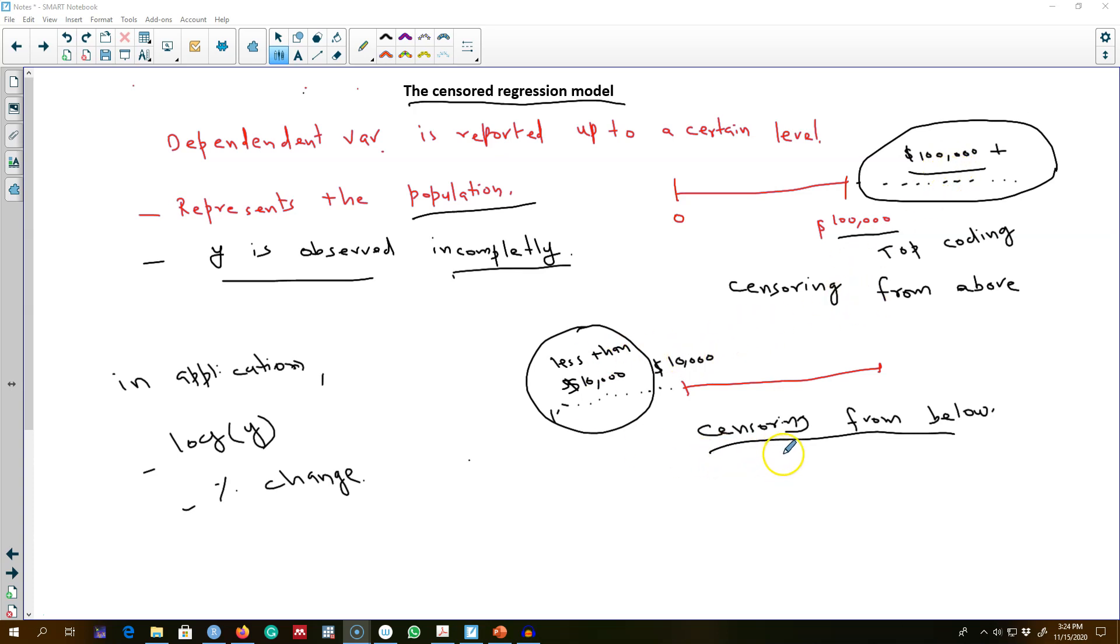I gave you another example where we censor our data from below, and although we have this segment of the observations in our data, we code it as less than $10,000.